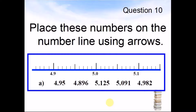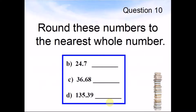Question 10. Round these numbers to the nearest whole number. B: 24.7. C: 36.68. D: 135.39. What are these numbers rounded to the nearest whole number? Pause the video and answer the questions.